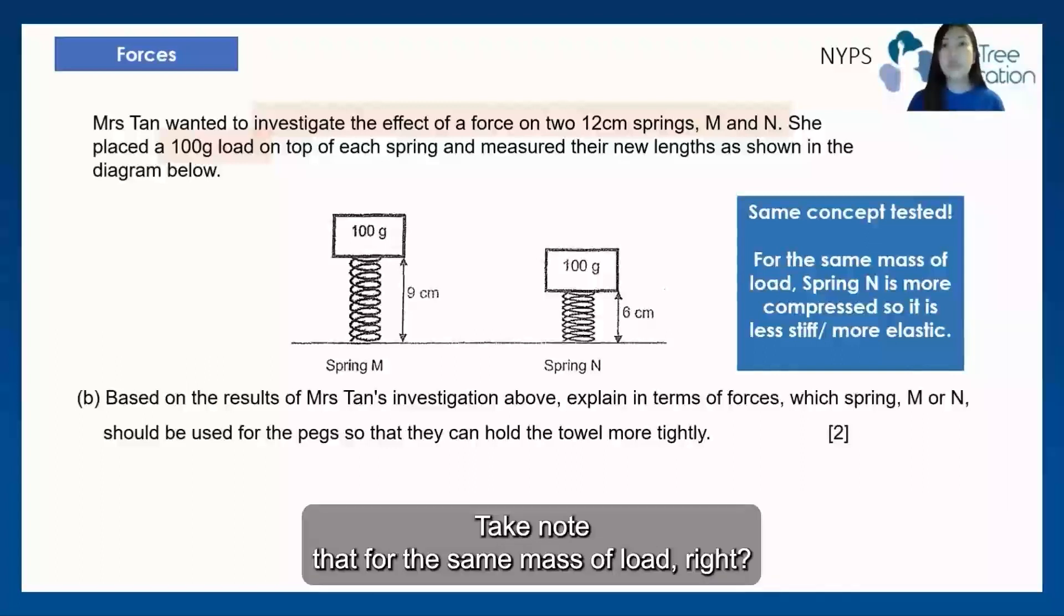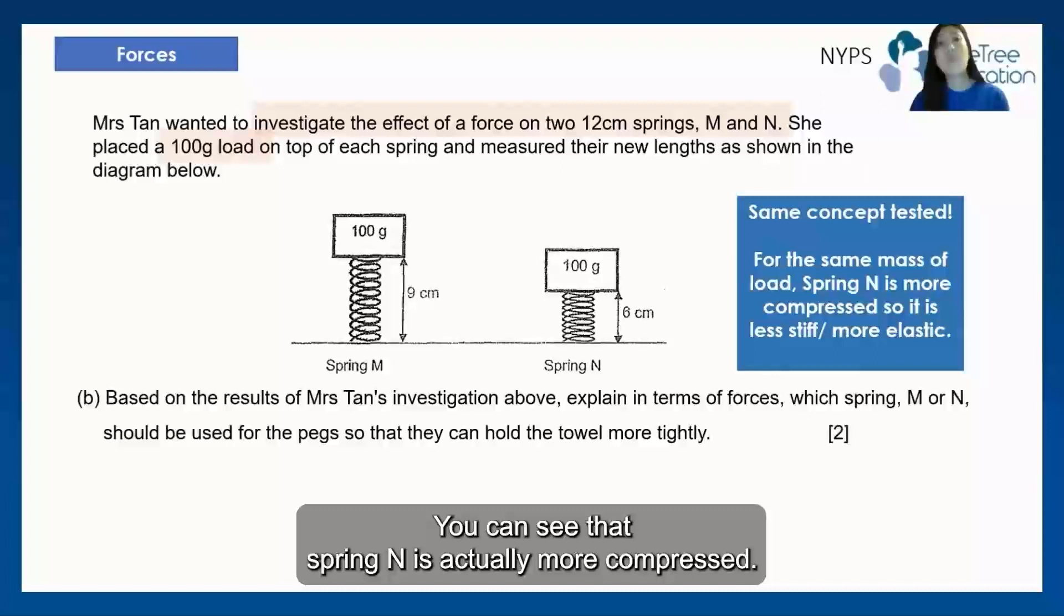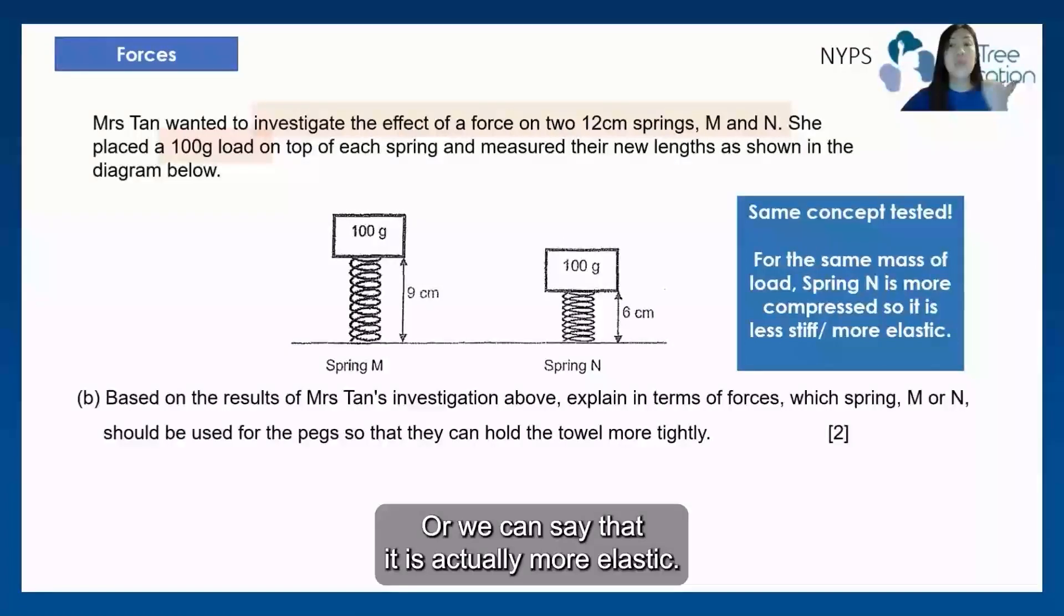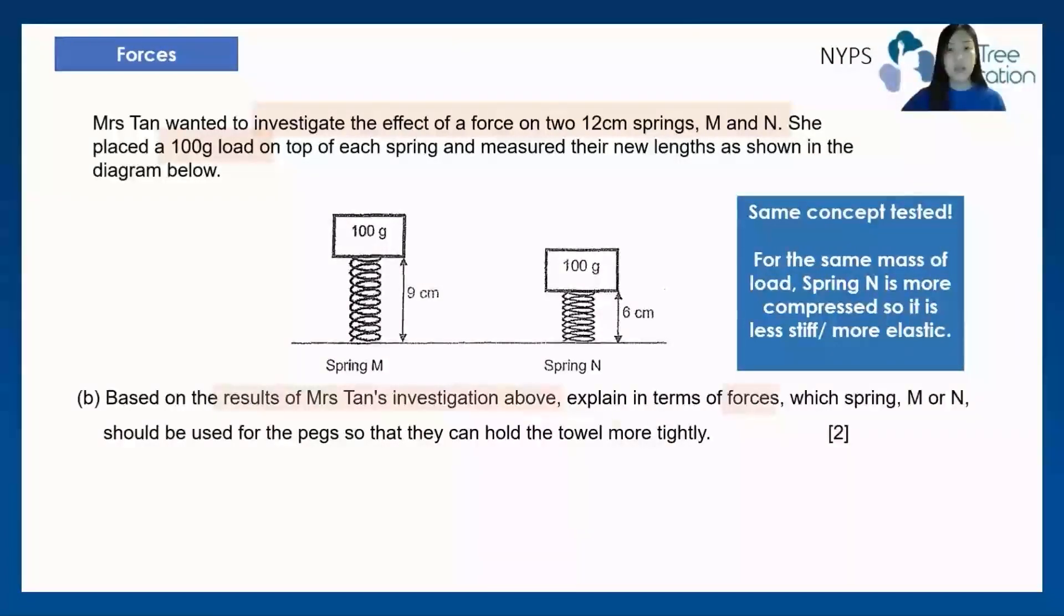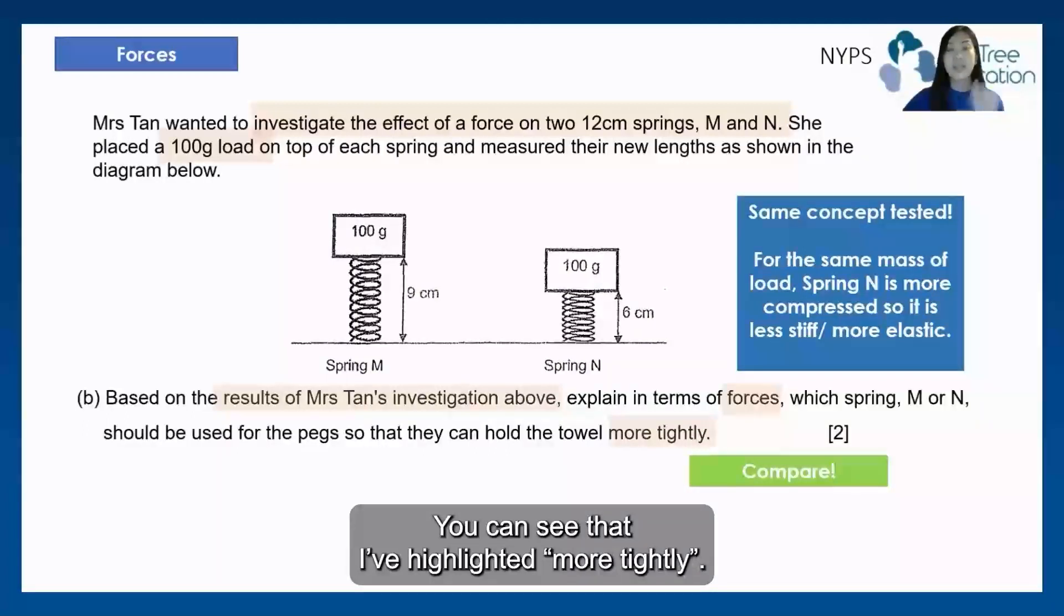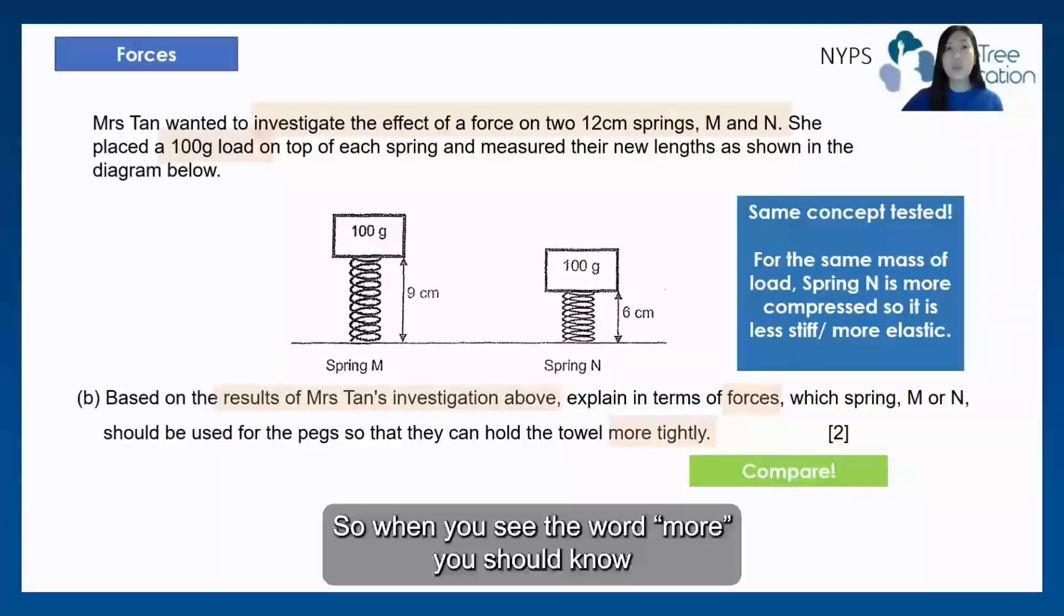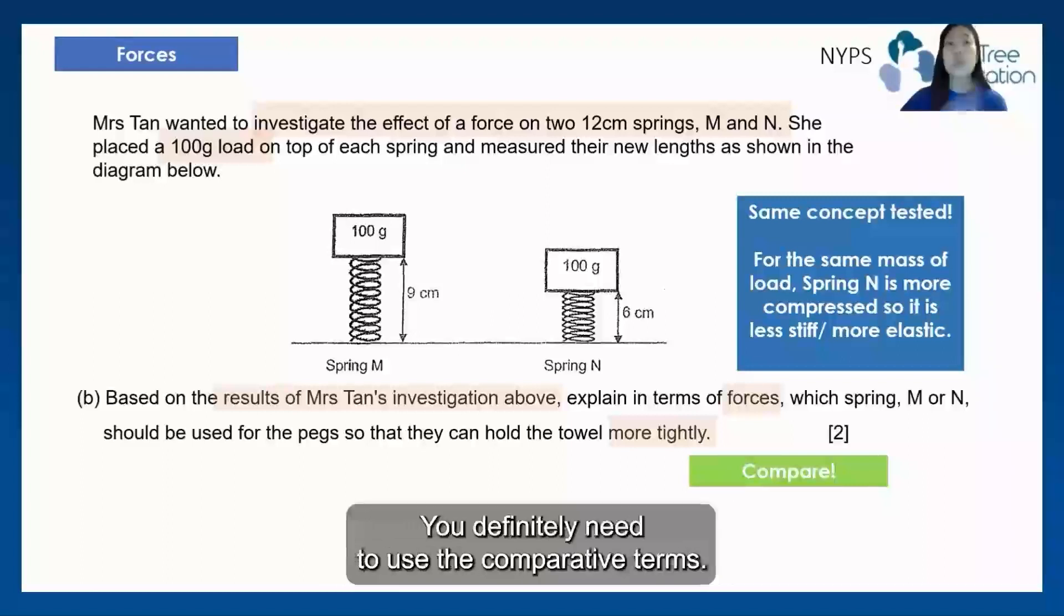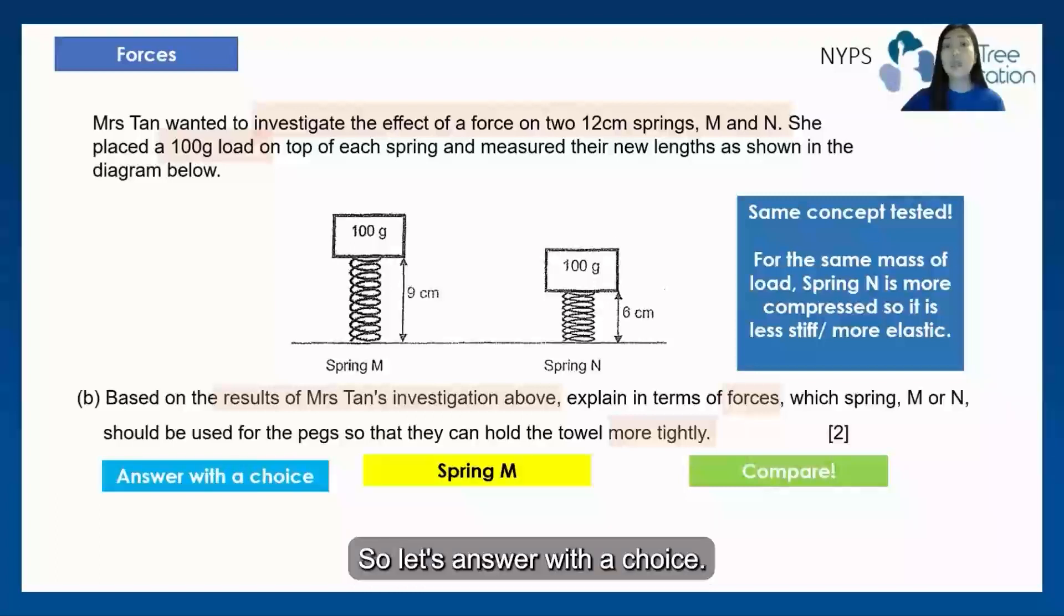But in this case, take note that for the same mass of load, you can see that spring N is actually more compressed, so it is less stiff, or we can see that it is actually more elastic. So here, we need to compare children, you can see that I've highlighted more tightly. So when you see the word more, you should know that this is a compare question. So if this is a compare question, you definitely need to use the comparative terms.